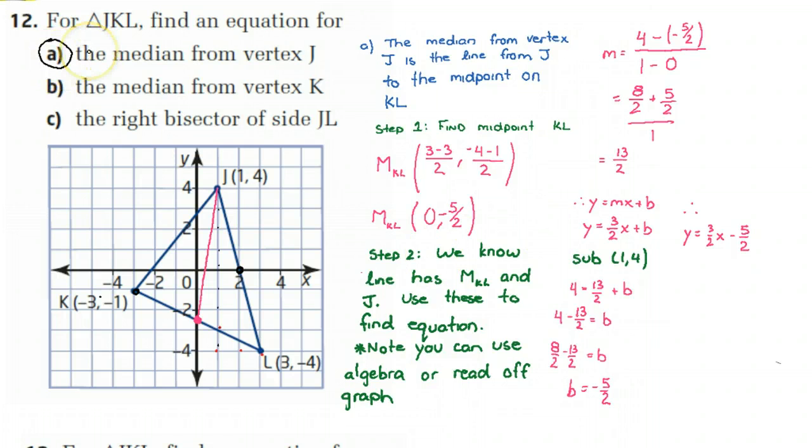So first thing we need to understand if we do this problem is what is a median. And the median is a line that travels from some vertex to the midpoint on the opposite side. So the median from vertex J is this pink line right here. So the equation of this line would be the line that passes through that line.